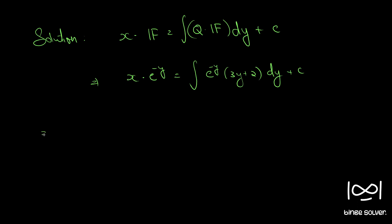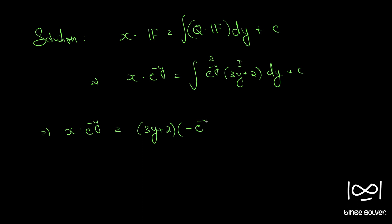So we get x times e raised to minus y equals the integral — and we need to do this by integration by parts. The first function is (3y plus 2) and the second function is e raised to minus y. So: first function times the integral of the second function, which is e raised to minus y.